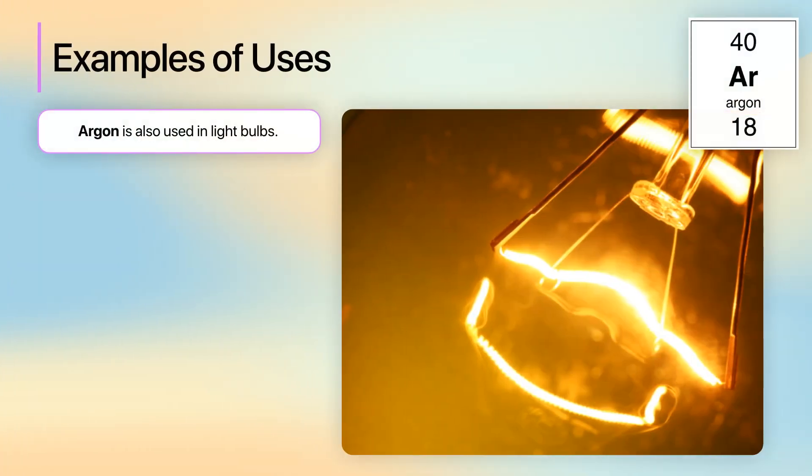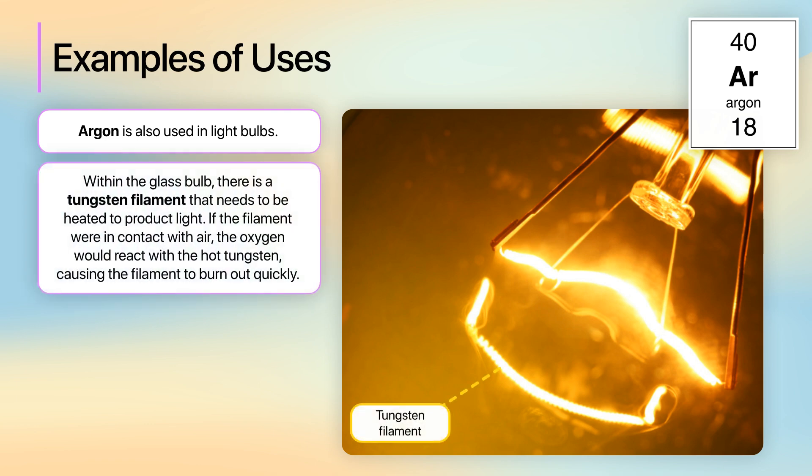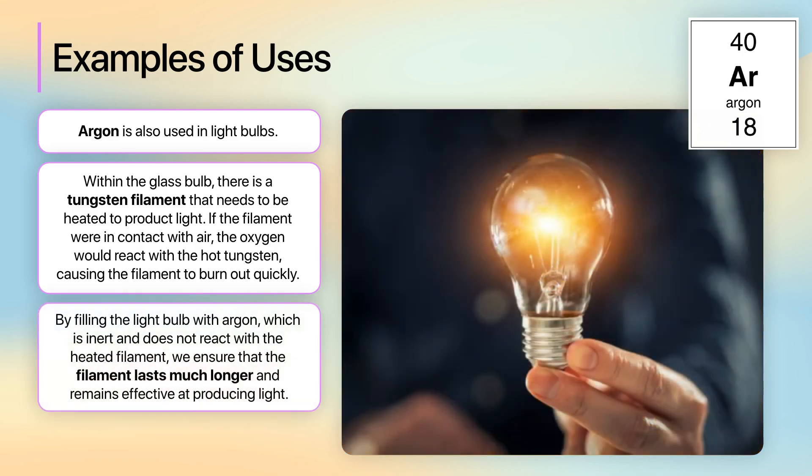Argon also finds a crucial use in light bulbs. Within the glass bulb, there is a tungsten filament that needs to be heated to produce light. If the filament were in contact with air, the oxygen would react with the hot tungsten, causing the filament to burn out quickly. By filling the light bulb with argon, which is inert and does not react with the heated filament, we ensure that the filament lasts much longer and remains effective at producing light.